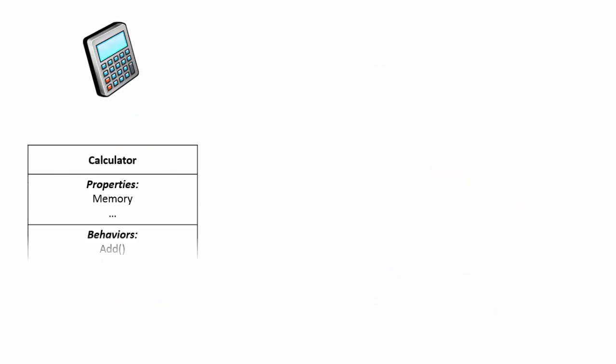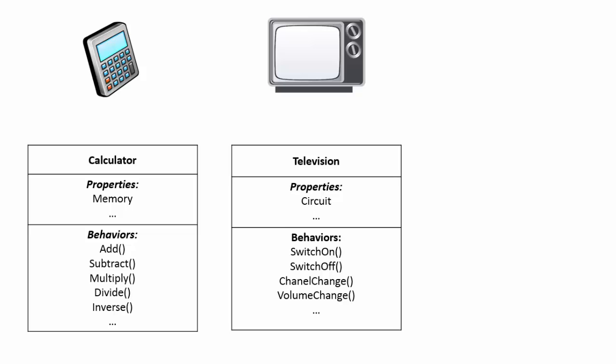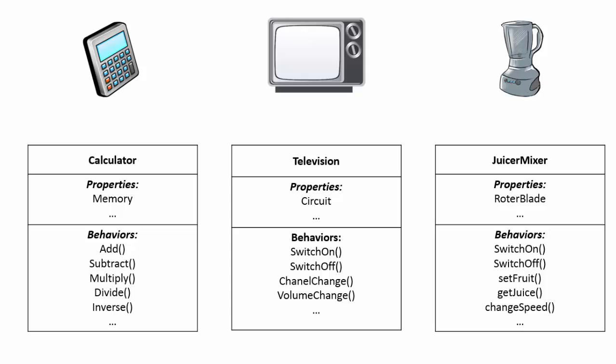The world around us is full of entities. In order to model them, all we need to do is identify them, their properties and their behaviors. And the good news is, it is our brain's natural way. Object-oriented approach is a way of designing.